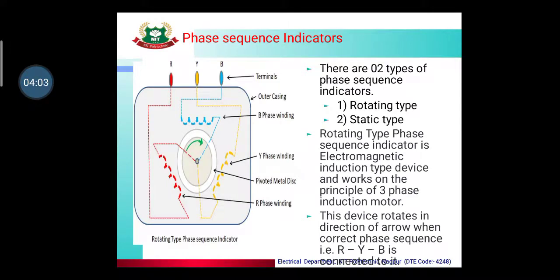Moving on to the second indicator — the phase sequence indicator. This indicator shows the phase sequence of the three phases: R, Y, and B. The correct phase sequence is R-Y-B. If any phase is interchanged — such as Y-R-B or B-Y-R — that is a reverse phase sequence. There are basically two types of phase sequence indicators: rotating type and static type.